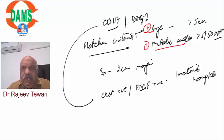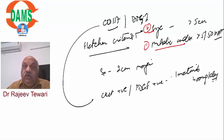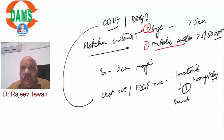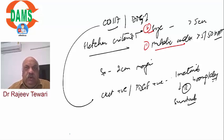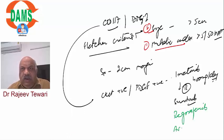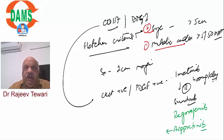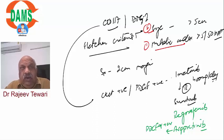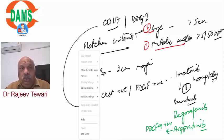Imatinib dose is 400 mg per day. For imatinib-resistant GIST, the drug is sunitinib. Third-generation drug is regorafenib; fourth-generation is avapritinib, which is also preferred for PDGF-alpha positive patients. The Carney triad for GIST includes GIST, paraganglioma, and pulmonary chondroma.